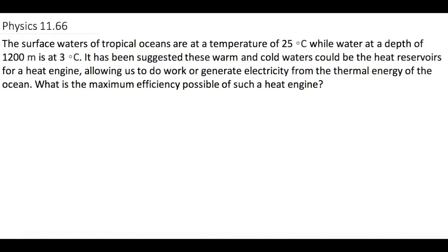Surface waters of tropical oceans are at a temperature of 25 degrees Celsius, while water at a depth of 1200 meters is at 3 degrees Celsius. It has been suggested these warm and cold waters could be the heat reservoirs for a heat engine, allowing us to do work or generate electricity from the thermal energy of the ocean. What is the maximum efficiency possible of such a heat engine? So let's draw our picture here.